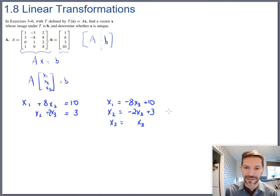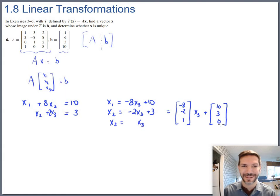And if you want to condense that into vector form, which I always like doing, say it's negative 8, negative 2, 1 times x3 plus 10, 3, 0. So there are the infinitely many vectors that you could multiply by A and produce 1, 6, 3, 10.